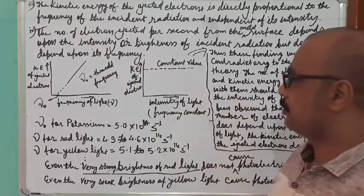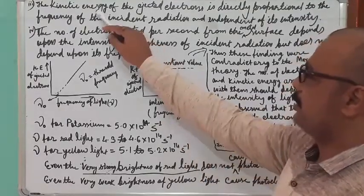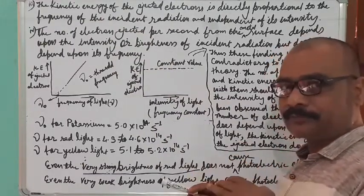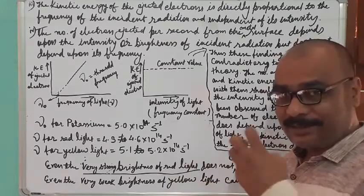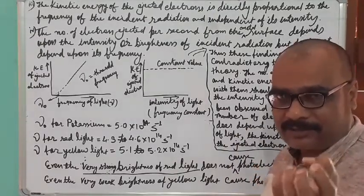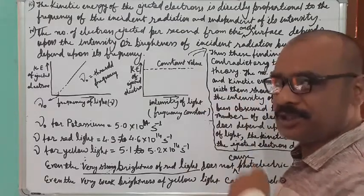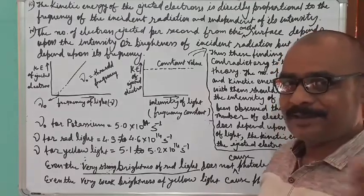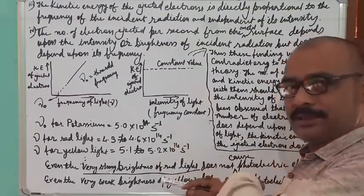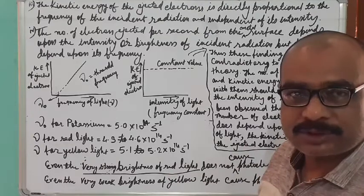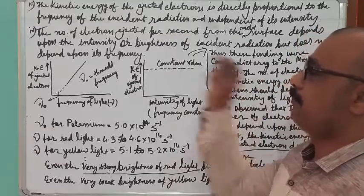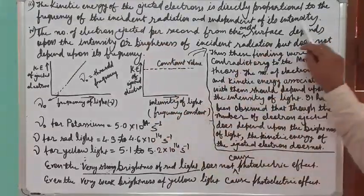The kinetic energy of the ejected electron, which is moving from the metal surface towards the receiver at the positive terminal, requires kinetic energy. That kinetic energy is provided by the frequency of the incident light, but not the intensity.